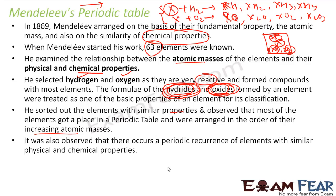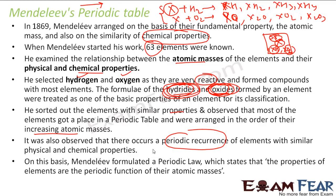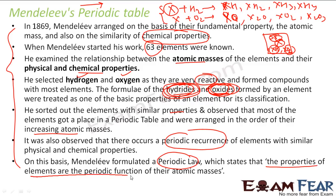He also observed the periodic recurrence of elements with similar properties. On the basis of all these experiments, he gave a periodic law, stating that the properties of the elements are a periodic function of atomic mass. This is called Mendeleev's periodic law.